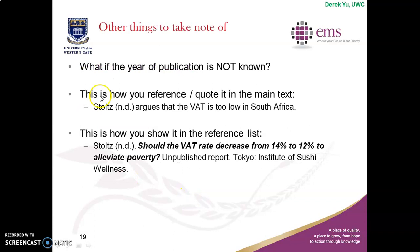What if the year of publication is not clearly shown? Then you put 'nd,' which means undated — you don't know the date. Even in the reference list you put 'nd' instead of the exact year. For example: Stores, initial — nd (undated) — this is the title of the article — then: unpublished report, city, colon, name of the publisher.